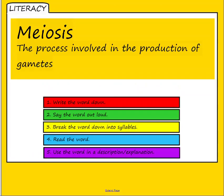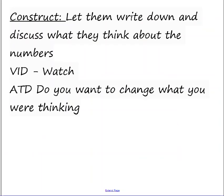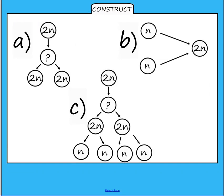So meiosis is the process involved in the production of gametes. And this happens in the testes and it happens in the ovaries. In the testes to make sperm and in the ovaries to make eggs. So if you look at all three of these schematic diagrams, you should be able to explain them. So if you pause the video and then describe as much as you can about each one, and then I'll go through them.